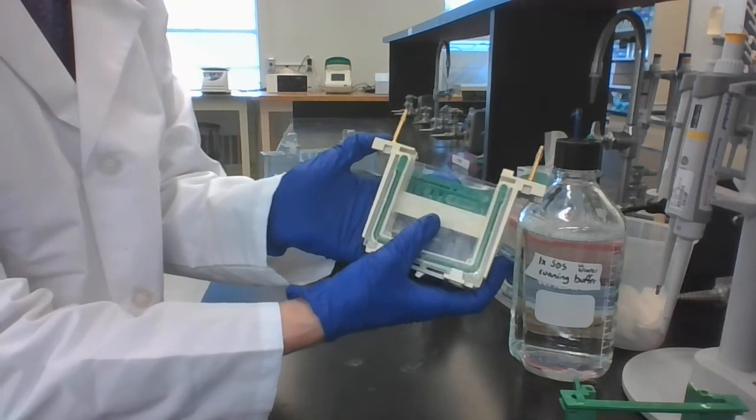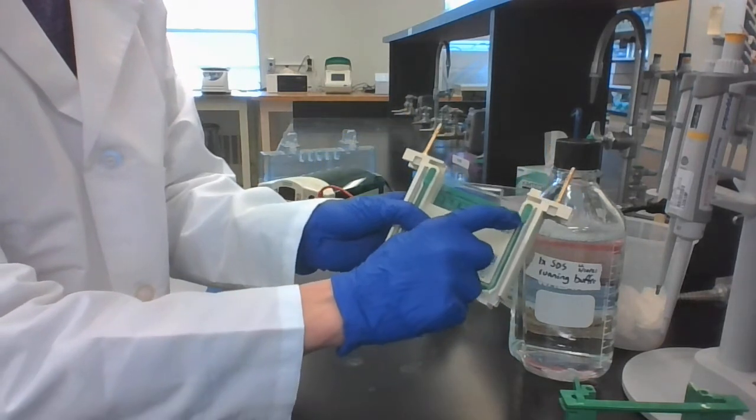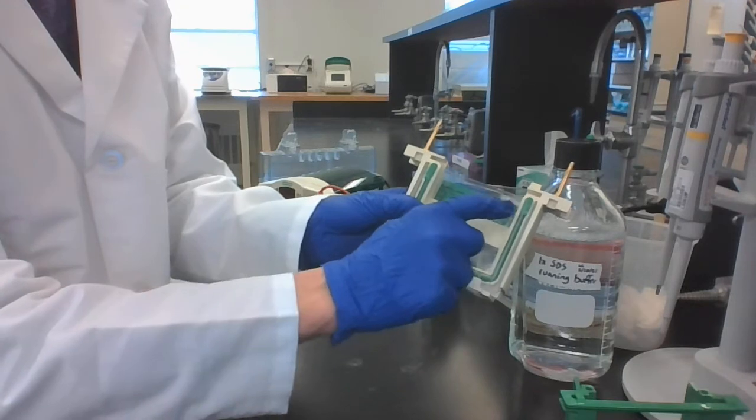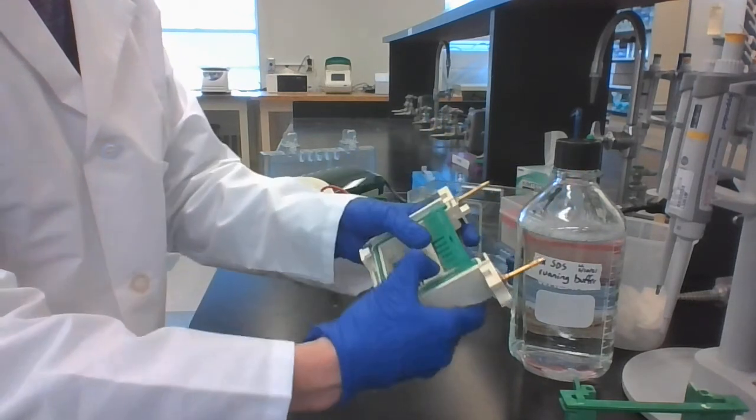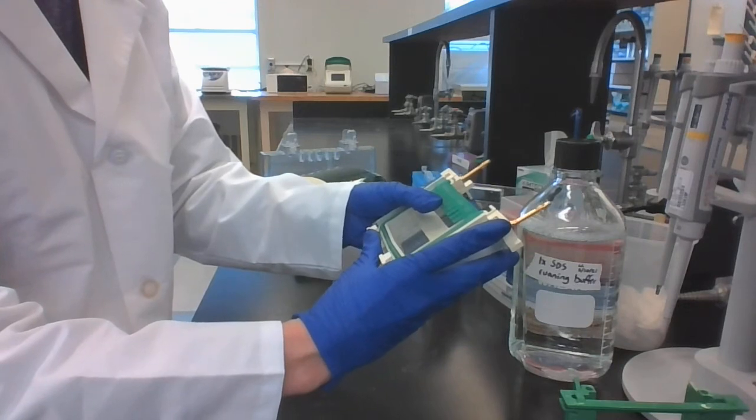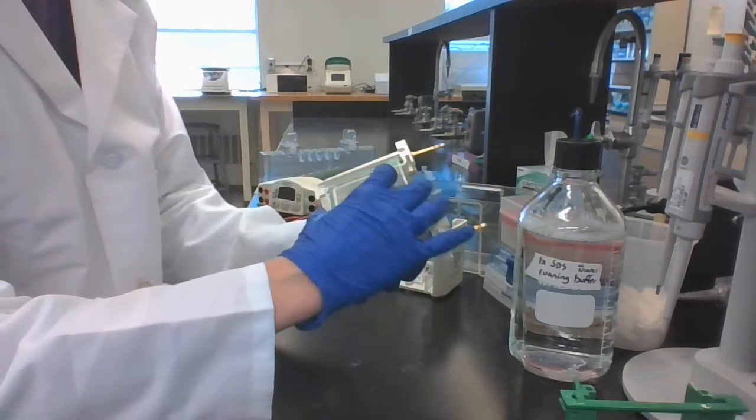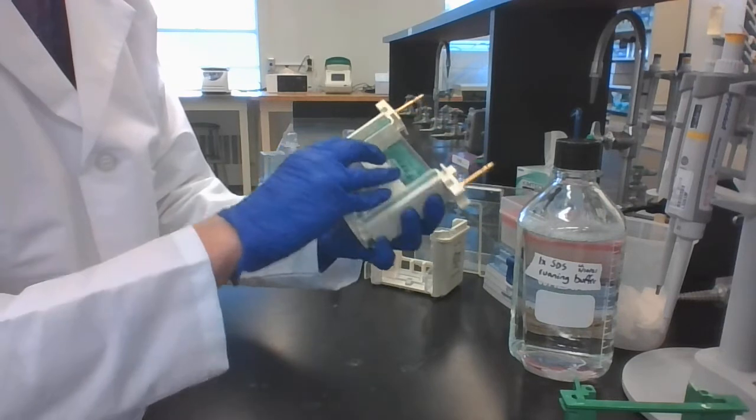Just gently slide it up, just so that the short plates or this part of the buffer dam is contacting the gasket and making a tight seal. Hold it there. Flip it around. Switch the other plate up a little. Do the same thing on the other side if you accidentally let go and it falls.